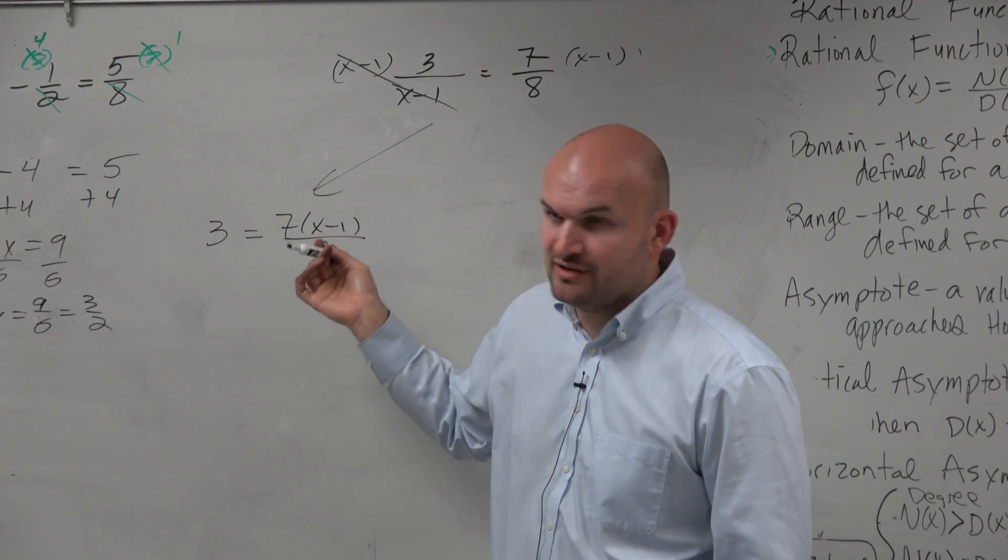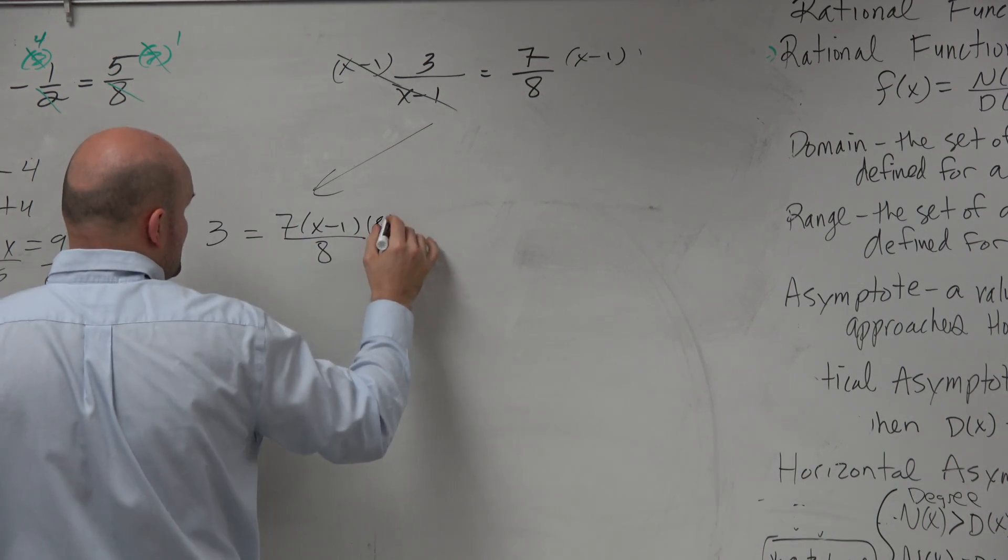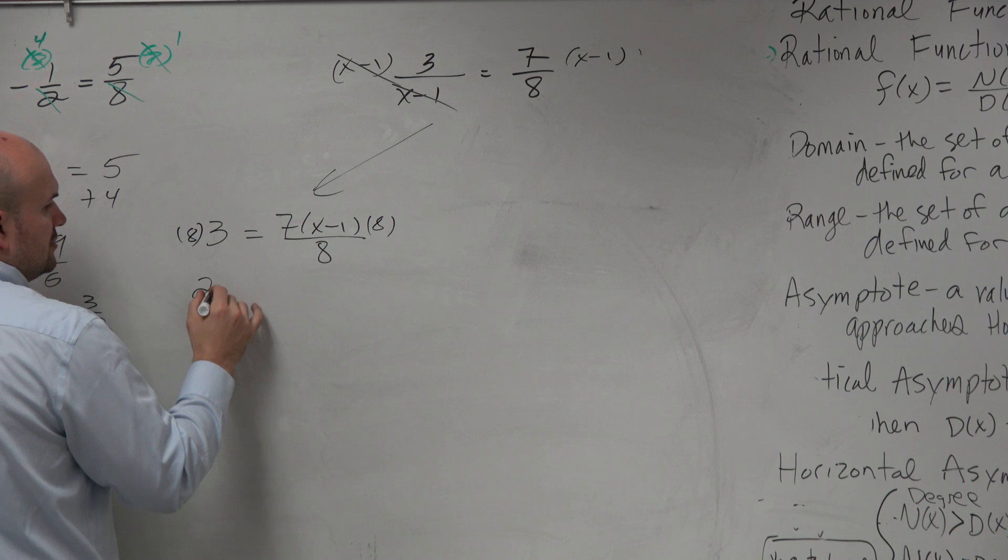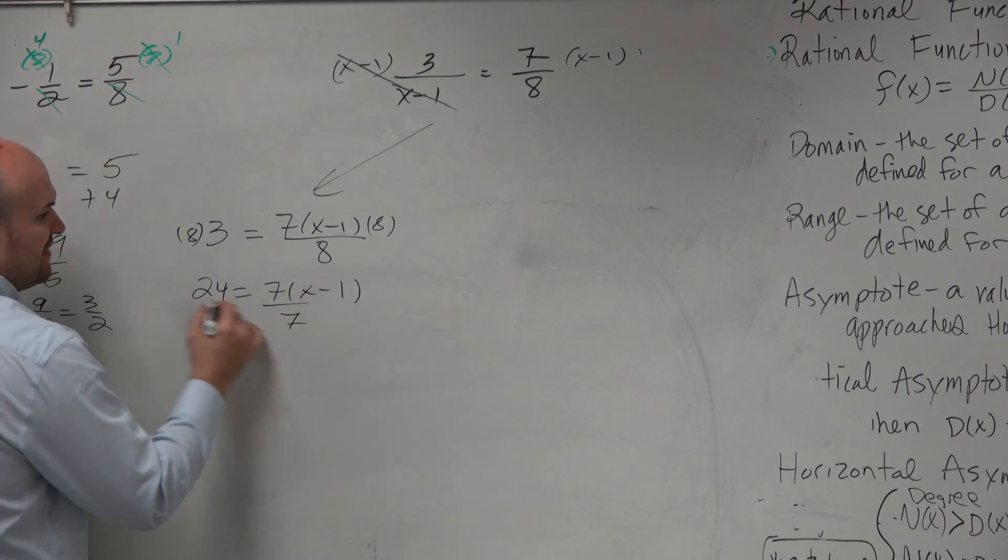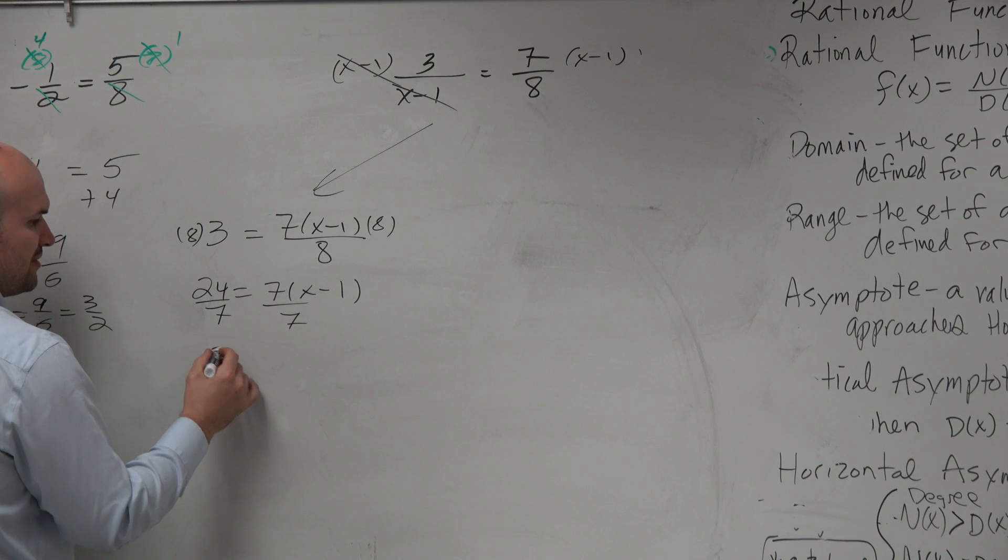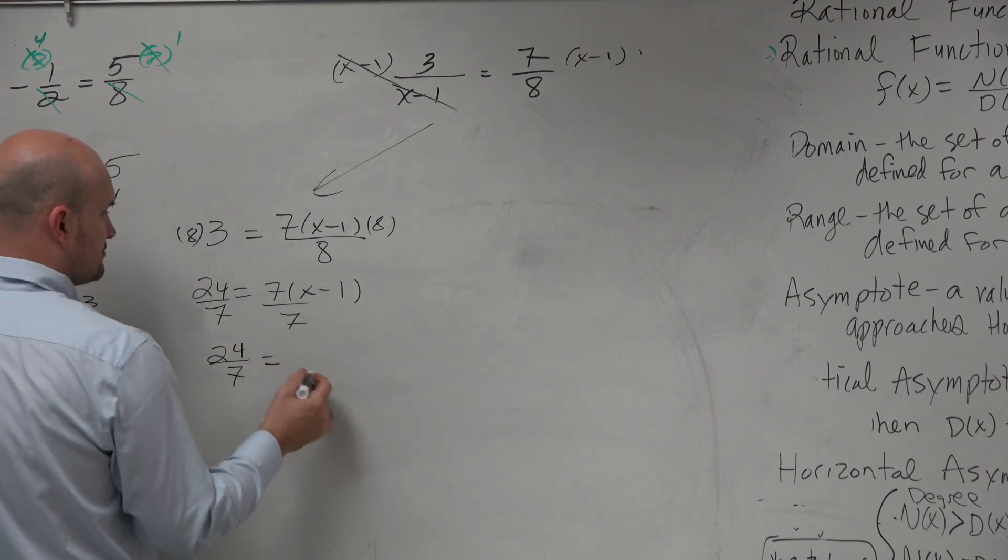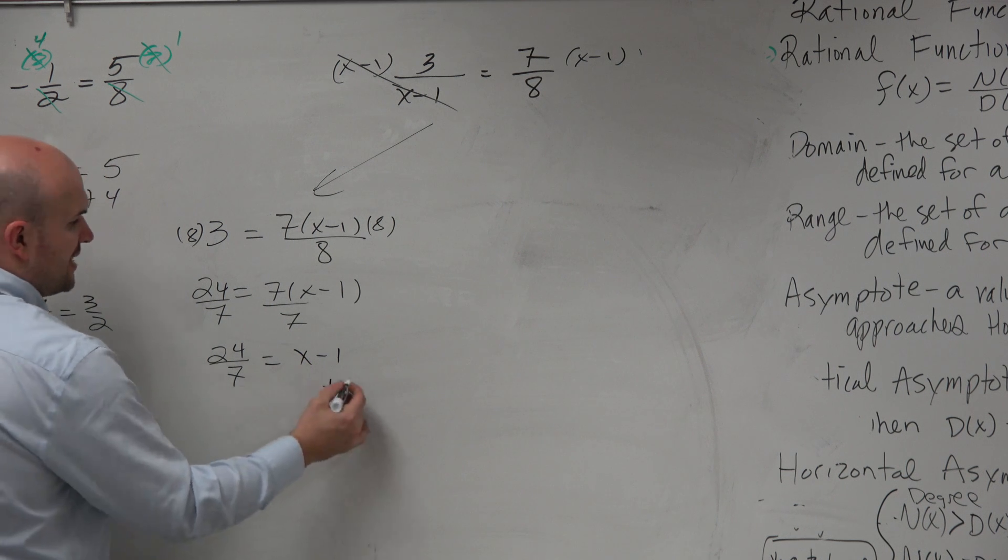So you can do this individually. You can multiply by 8 on both sides. 24 equals 7 times x minus 1. Then you'd have to divide by 7, because you can't go outside the parentheses. You can't divide that.